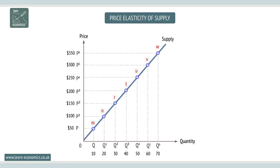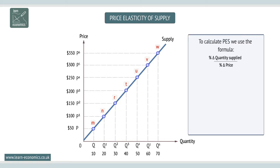To calculate PES, we use the formula percentage change in quantity supplied over percentage change in price. The value is equal to 1 at any point on a linear supply curve coming out of the origin.